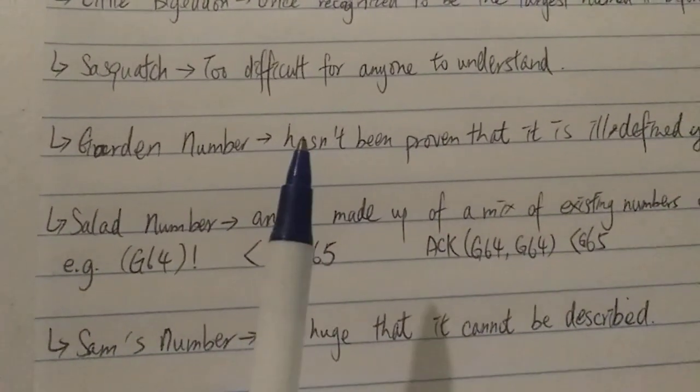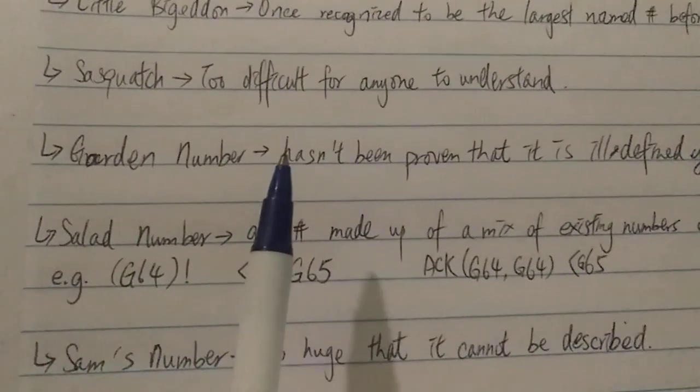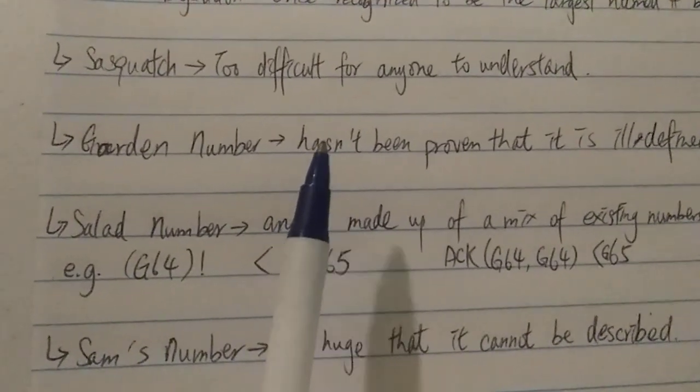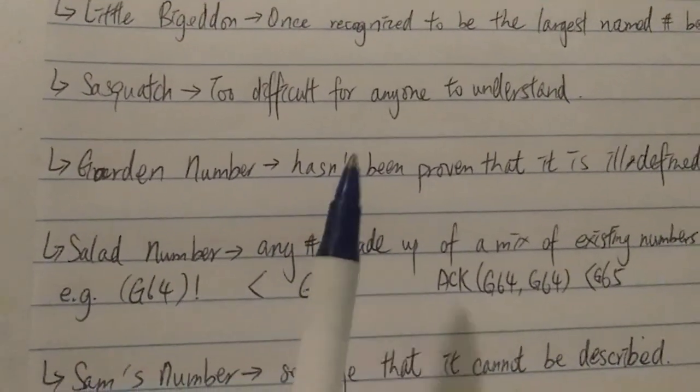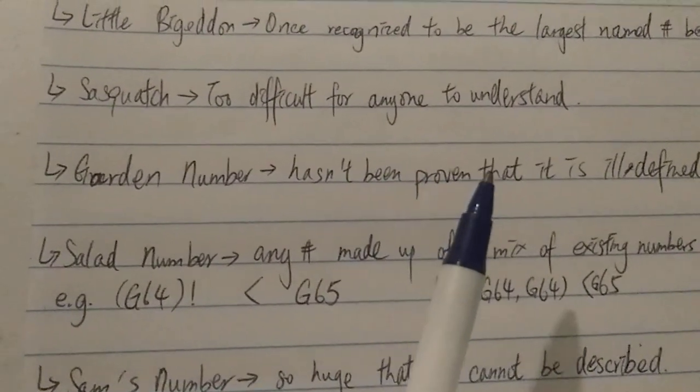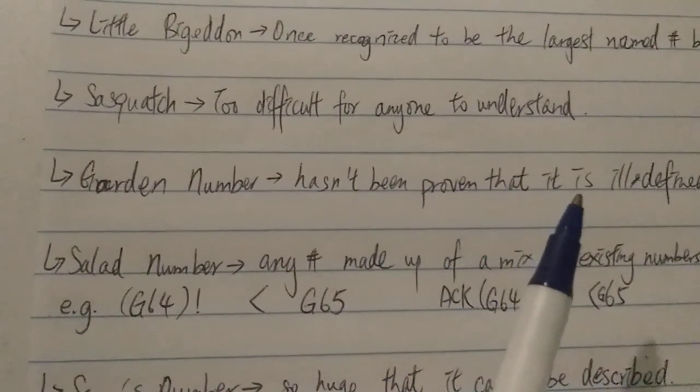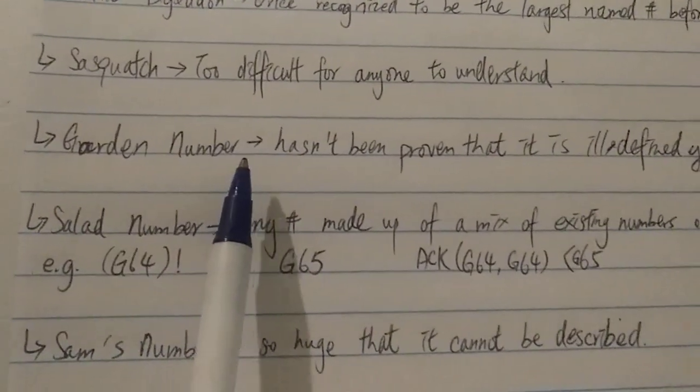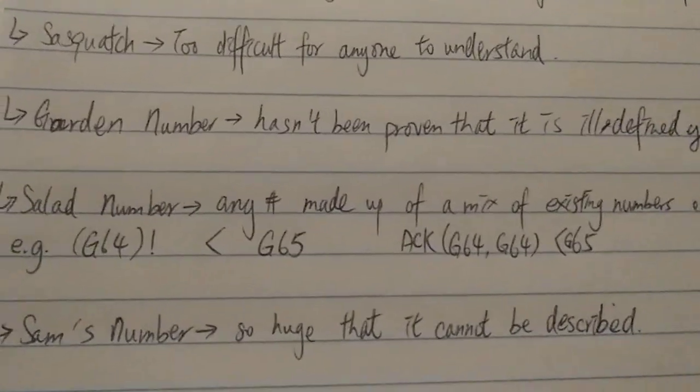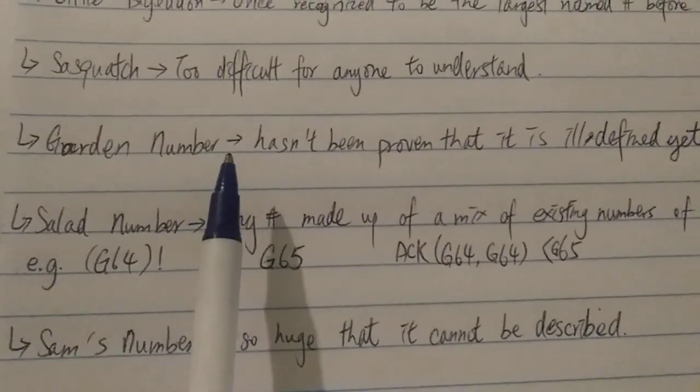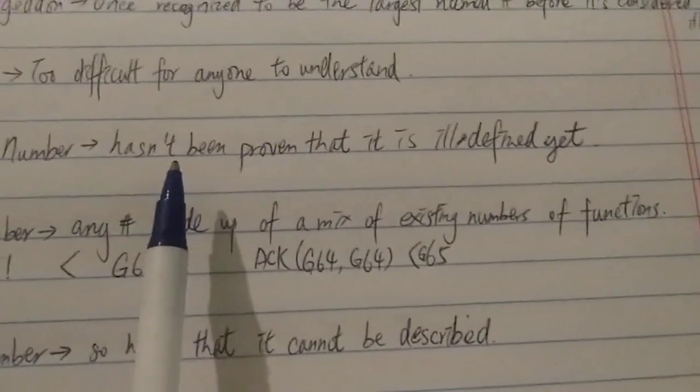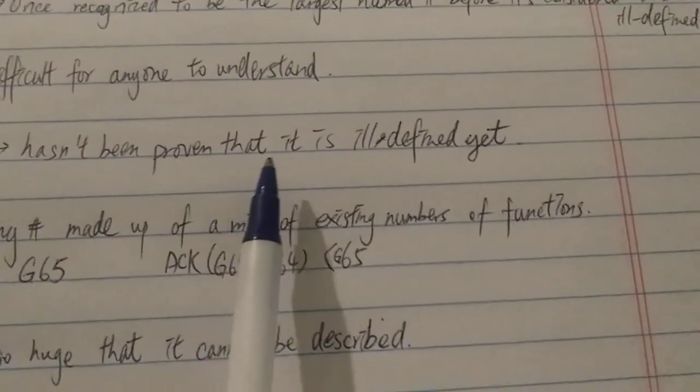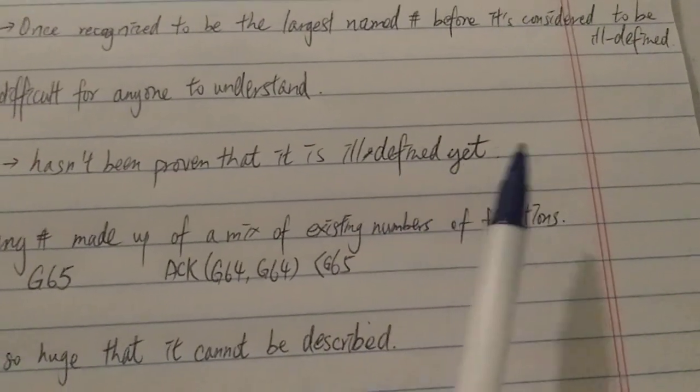And then right now, the current biggest named number, according to Googleology, at least as of right now in this video, 2020 April, is called Garden's Number. The reason it's currently the biggest named number is because it hasn't yet been proven that it is ill-defined.